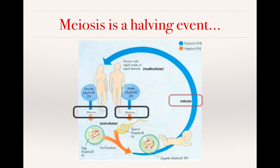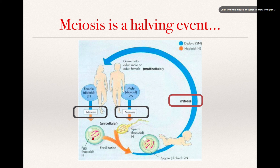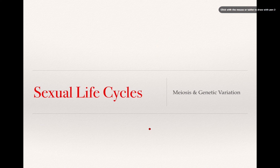So: meiosis cuts the chromosome number in half, while mitosis just copies what you already have. In humans, sex cells don't go through mitosis — they form by meiosis and immediately proceed to fertilization to restore the diploid number. We'll stop there, and the next videocast will look closely at meiosis and genetic variation. Thanks for listening.